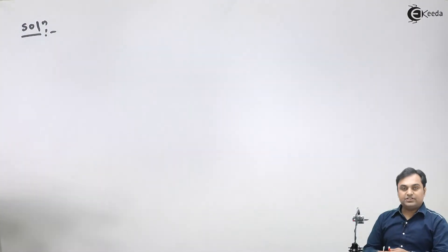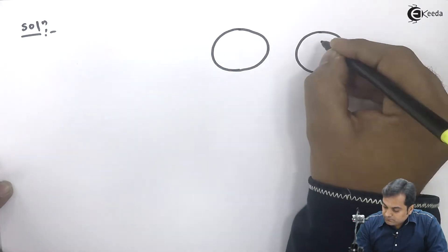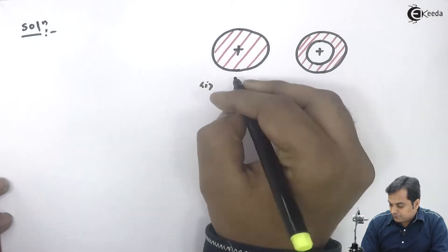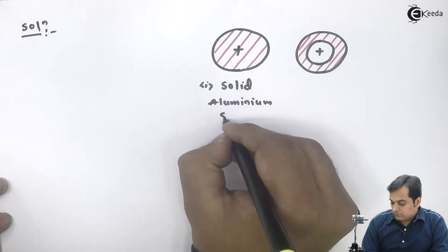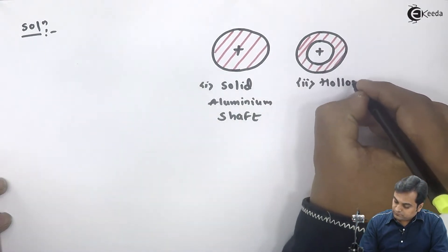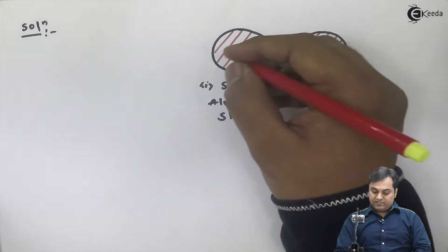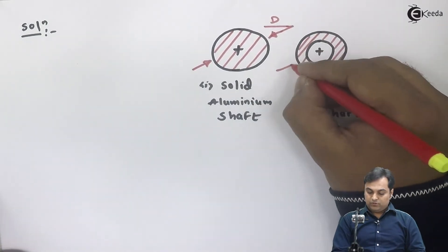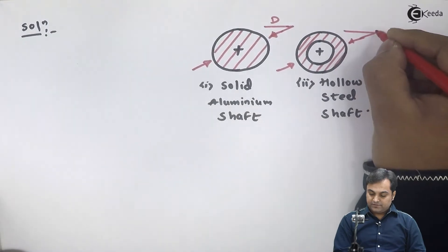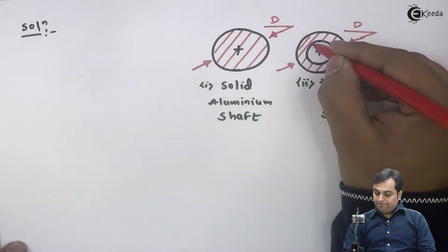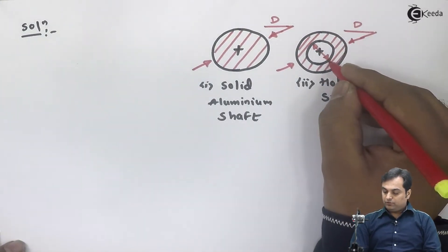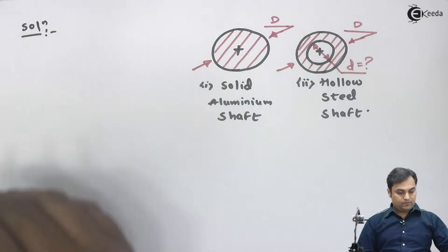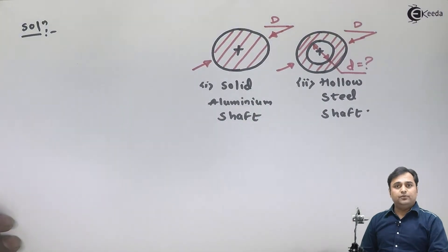For the solution, I'll first draw the cross-section of both shafts. Here I have the solid aluminium shaft and the hollow steel shaft. The solid shaft has external diameter capital D, and the hollow shaft also has its external diameter as capital D — both values are 120 mm. We have to calculate the inner diameter of the hollow shaft.